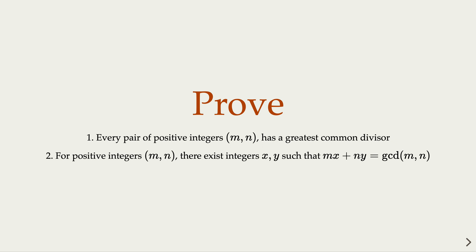Today we're going to prove two fundamental facts in number theory. The first one is that every pair of positive integers m and n has a greatest common divisor.